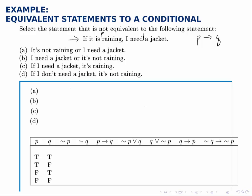For A, we have it's not raining or I need a jacket. So we know we're going to have the OR operator in the middle. It's not raining is the negation of P. I need a jacket is Q. So not P or Q.